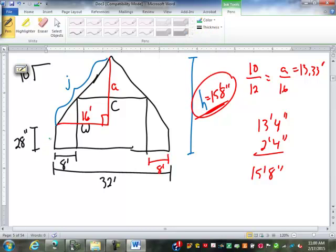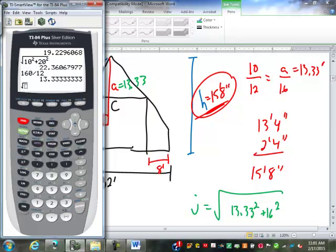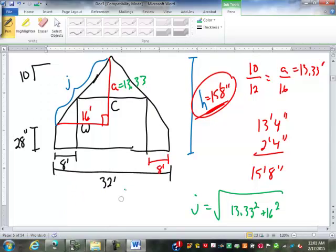Now, we can find J here because there's no overhang. If there was an overhang, we'd have to draw in a bigger triangle, find a new height, and all that. There's no overhang here, so we can find J based on the 16 and the 13.33. So it's going to be A squared plus B squared. J will be the square root of 13.33 squared plus 16 squared. So second square root of second answer squared plus 16 squared. 20.827. There's J.